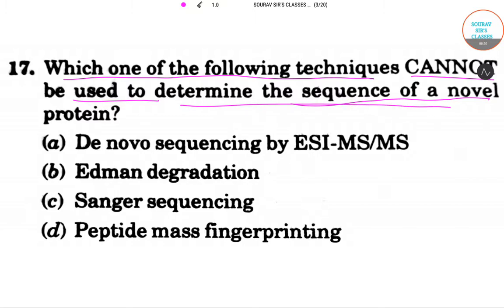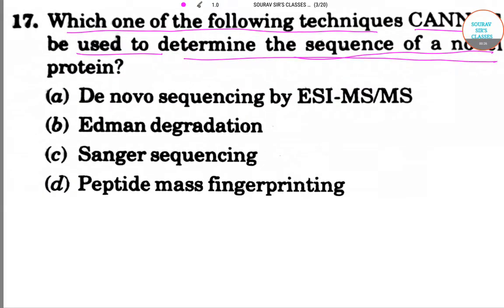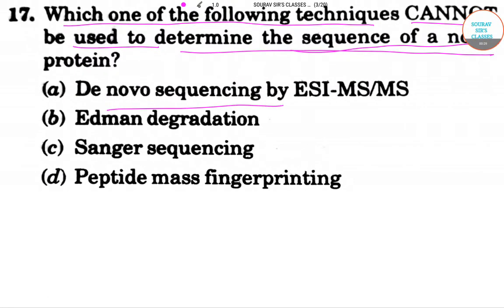The options are de novo sequencing by ESI-MS/MS, also called de novo sequencing method; option B is Edman degradation; option C is Sanger sequencing; option D is peptide mass fingerprinting. The correct answer will be option D.